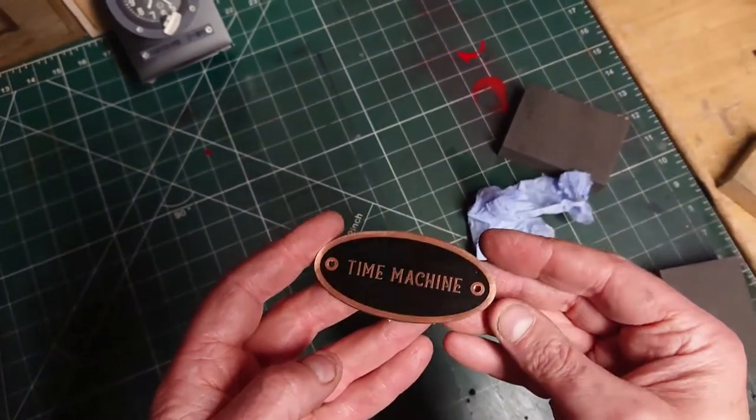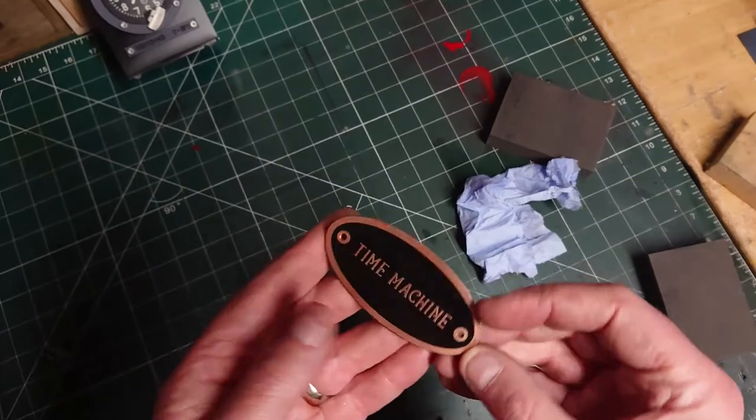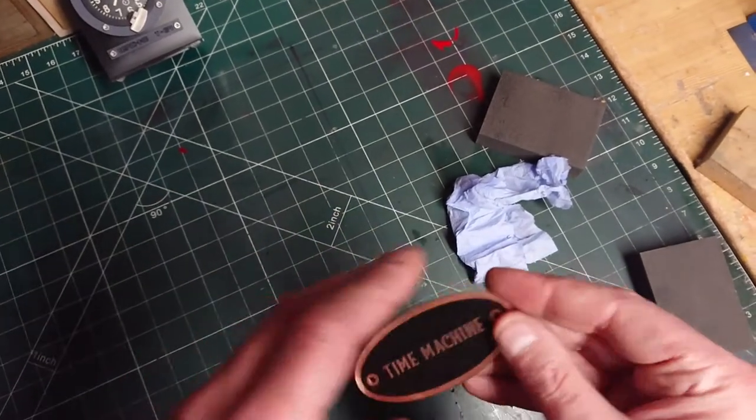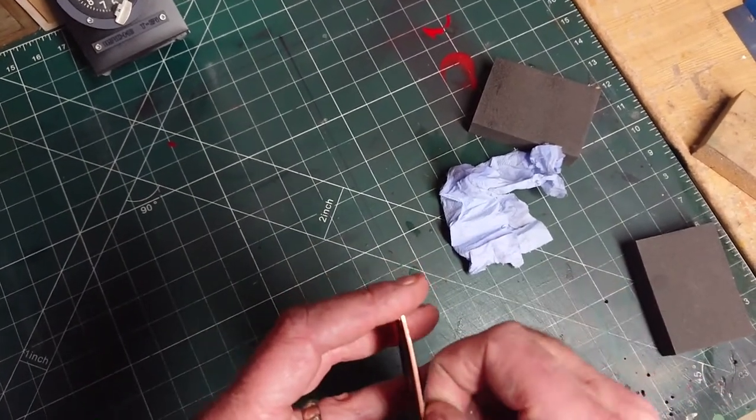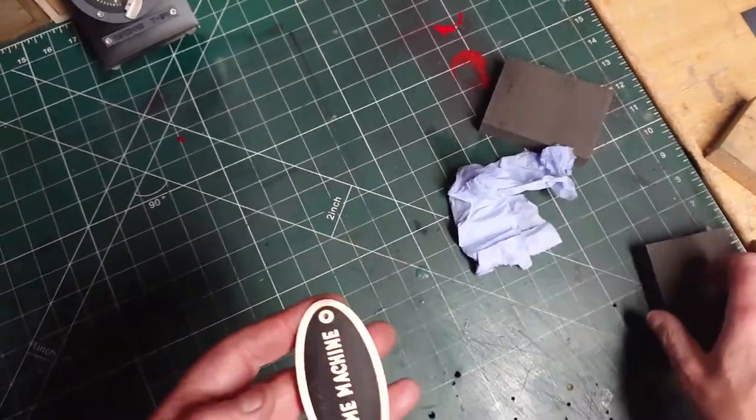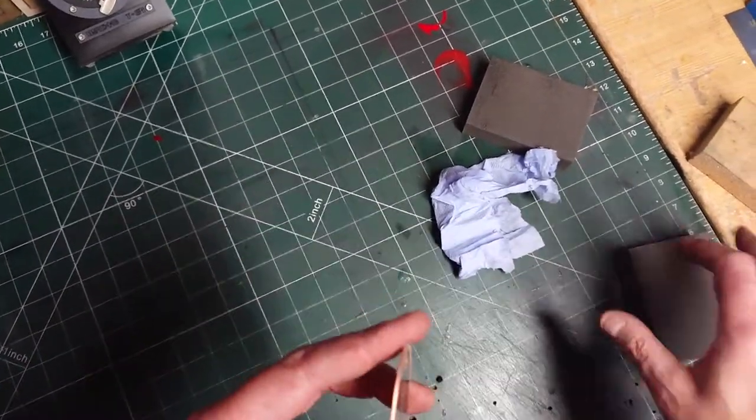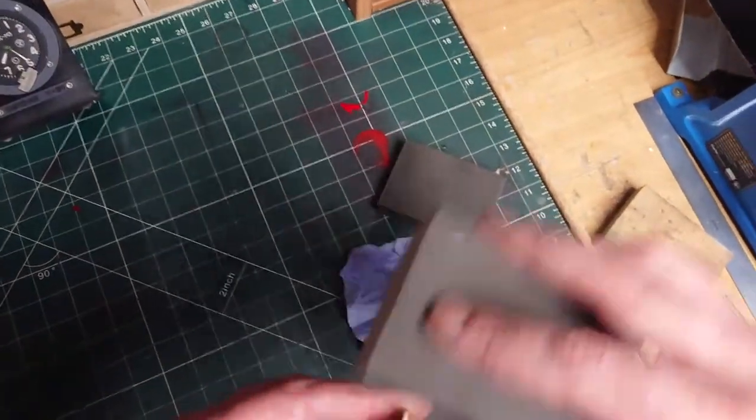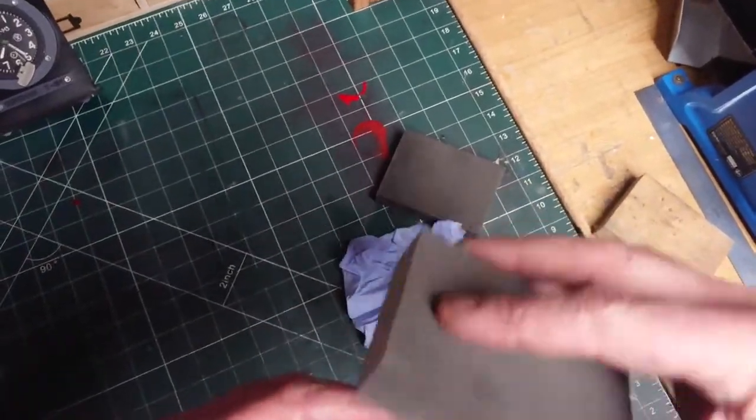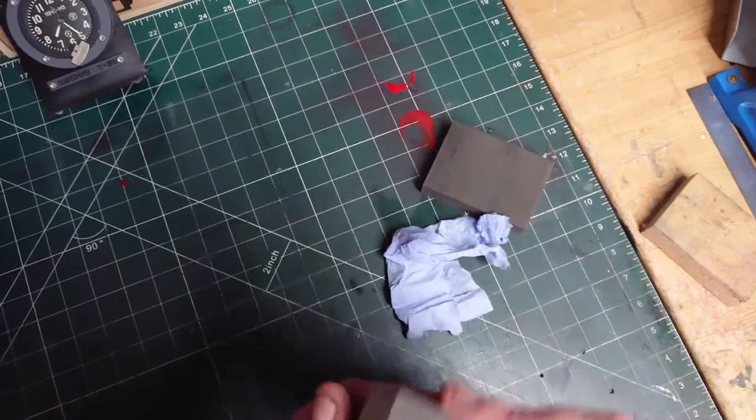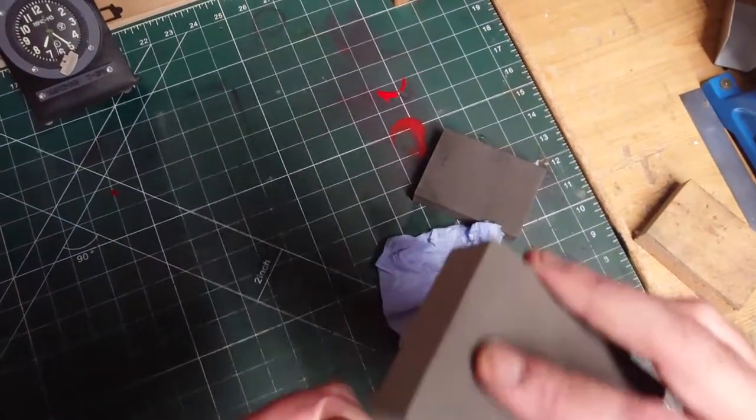Right then folks, so you can see it's cut out now and I've drilled the holes for the screws, and then it's basically just a bit of a clean up around the edges and a lacquer. So again with a little pad, just give it a little wipe around the edge, get all the burrs off.